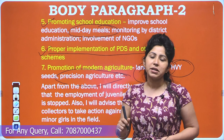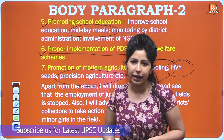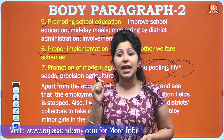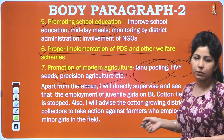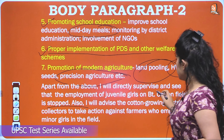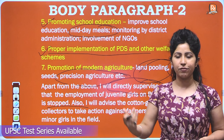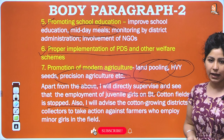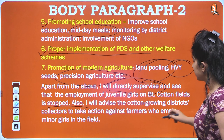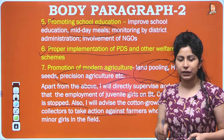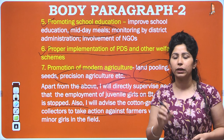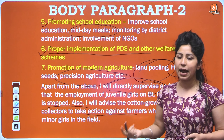Apart from all these steps, as District Collector I will directly supervise and ensure that employment of juvenile girls on BT cotton fields is stopped immediately — child labor must be stopped from the very next day of becoming aware. I will also advise the cotton-growing district collectors to take action against farmers and contractors who employ minor girls, ensuring coordination between district collectors of all relevant districts to effectively handle the problem of child labor.